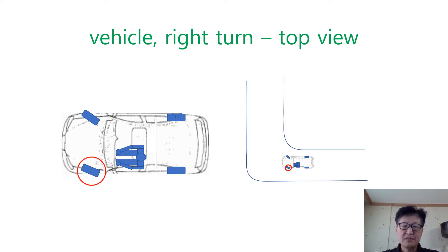As an example, let's think about the vehicle at the corner turning to the right. The front left tire will be investigated.